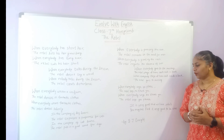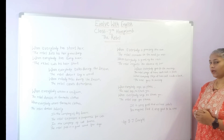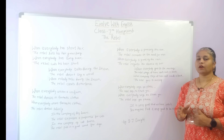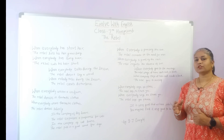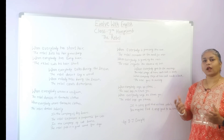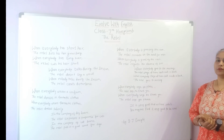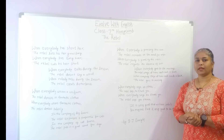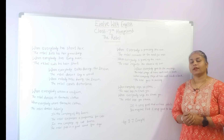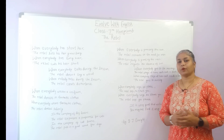In the last couplet, the poet says it is very good that we have rebels, but you may not find it very good to be one. It is good to be around the rebel, but not good to be the rebel — because of the opposition of society. Being a rebel would be very chaotic. It disturbs our life. The poem expresses the contradictory nature and the importance of the rebels.